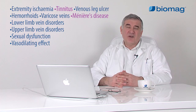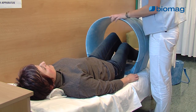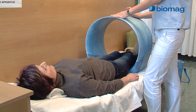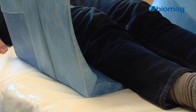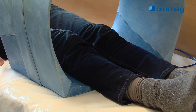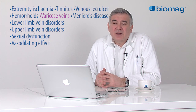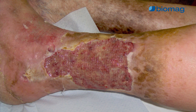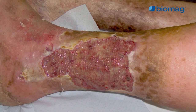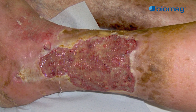Lower extremity varicoses, or varicose veins, belong to another common group of diseases which can be positively treated by low-frequency magnetic therapy. Varicose veins cause a wide range of complications, as their trophic effects on tissue may lead to the development of venous leg ulcer, i.e. the disintegration of tissue, ischemia, necrosis, and open injuries, which then require special and intensive long-term treatment.